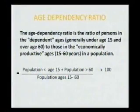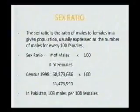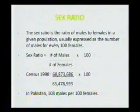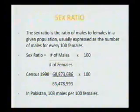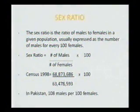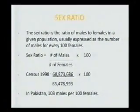As long as you have these two numbers, you can calculate a ratio of how many people are dependent on the others. Then there is the sex ratio. The sex ratio is the ratio of males to females in a given population, usually expressed as the number of males for every 100 females. It simply equals the number of males divided by the number of females, multiplied by 100, telling you how many males there are per 100 females.